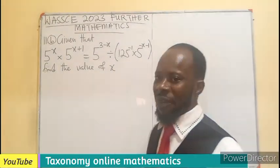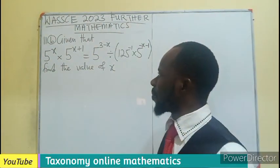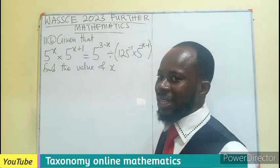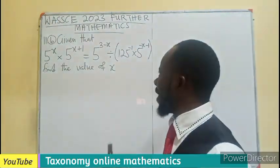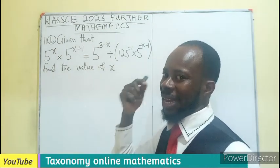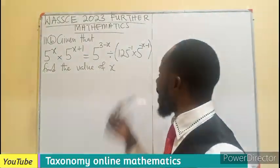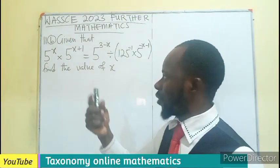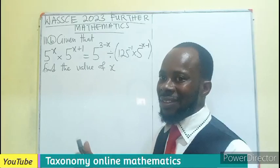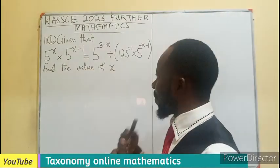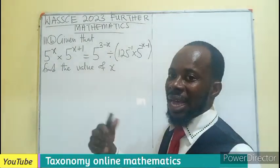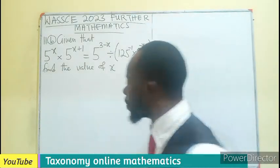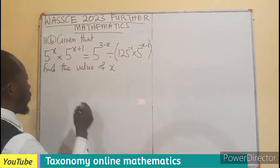Given that 5 exponent x times 5 exponent x plus 1 equals 5 exponent 3 minus x divided by 125 exponent negative 1 times 5 exponent negative x minus 1. This is a simple linear indices equation. So we have to rewrite the question and perform the laws of addition and subtraction which is multiplication and division. Let's put that into practice.